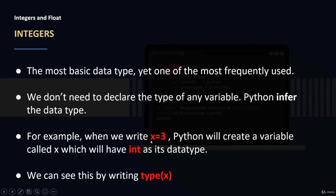For example, if we just write x equals 3 and this is the first time we are referring to this X, then Python will create a variable called X which will have int as its data type. So if we say x equals 3, we don't really need to have int before X.